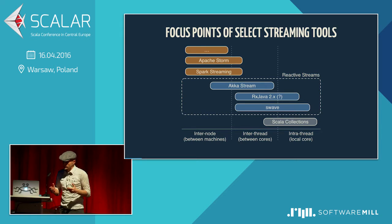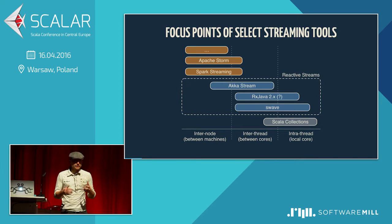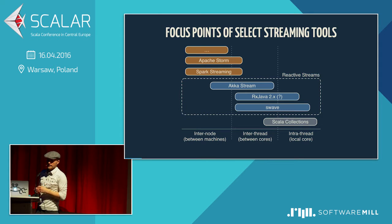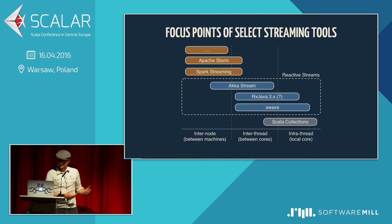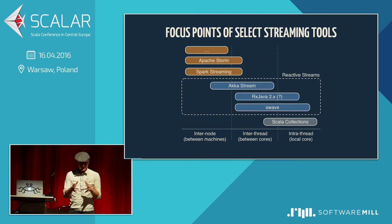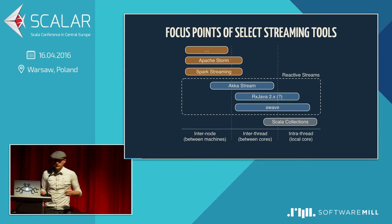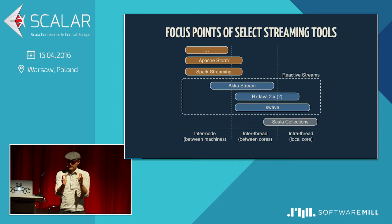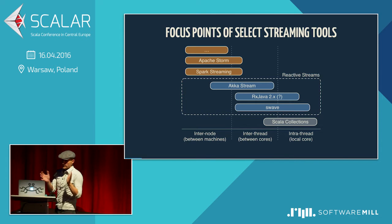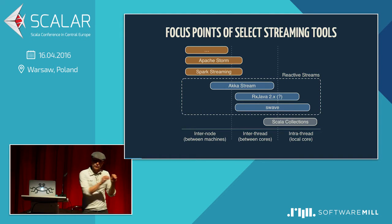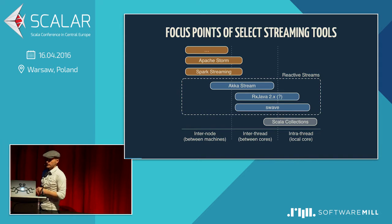When you look at AkkaStream, it has a focus on the inter-thread scenario — on one machine with several threads, how do I do stream processing in the right way? My guess is it will move further toward distributed over time, because we already have AkkaCluster. I've also put Scala collections here as the workhorse we use locally. Swave is interesting because it targets that same area as AkkaStream — the inter-thread scenario — but doesn't concern itself with going more distributed. Rather, the goal is to be smaller, more lightweight, and get more into the space where we can use it instead of collections, because it has certain advantages.